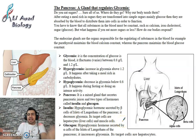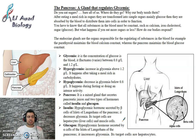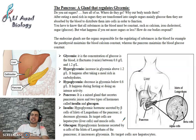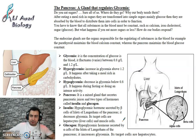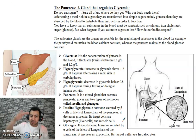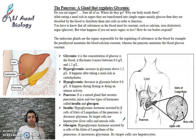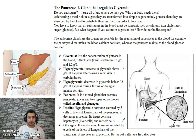How does insulin decrease blood sugar? When glucose in the blood is high, insulin signals the muscles and liver cells to take the excess glucose from the blood. The liver and muscle cells absorb the glucose, so glucose levels in the blood begin to fall back to normal.